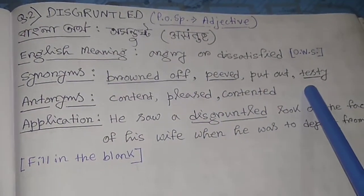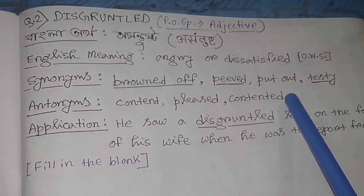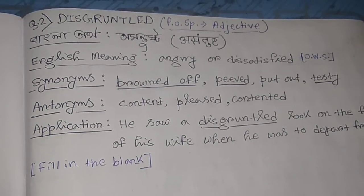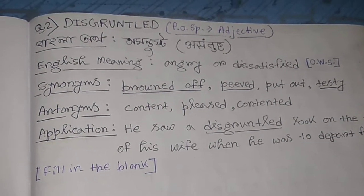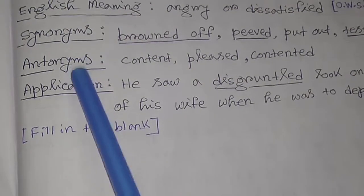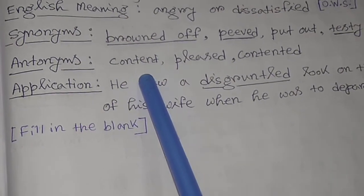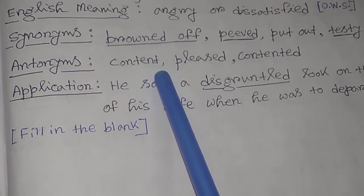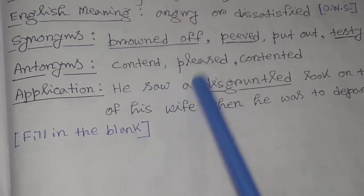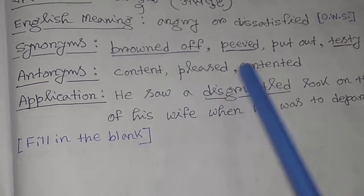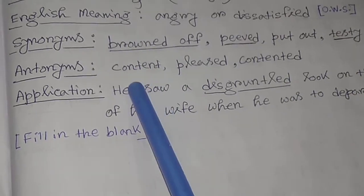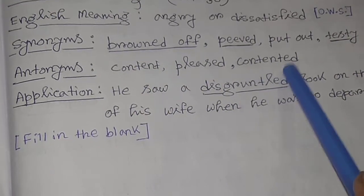Antonyms of disgruntled are: content, pleased, and contented.